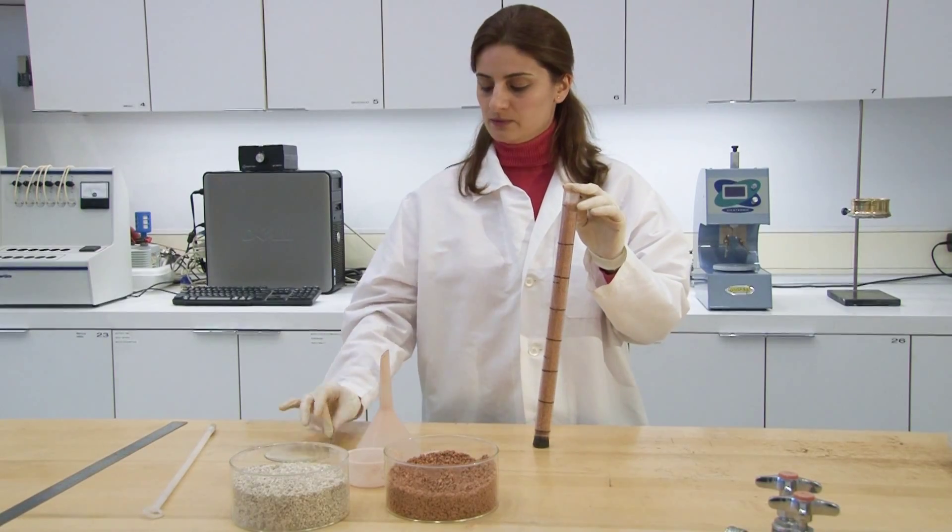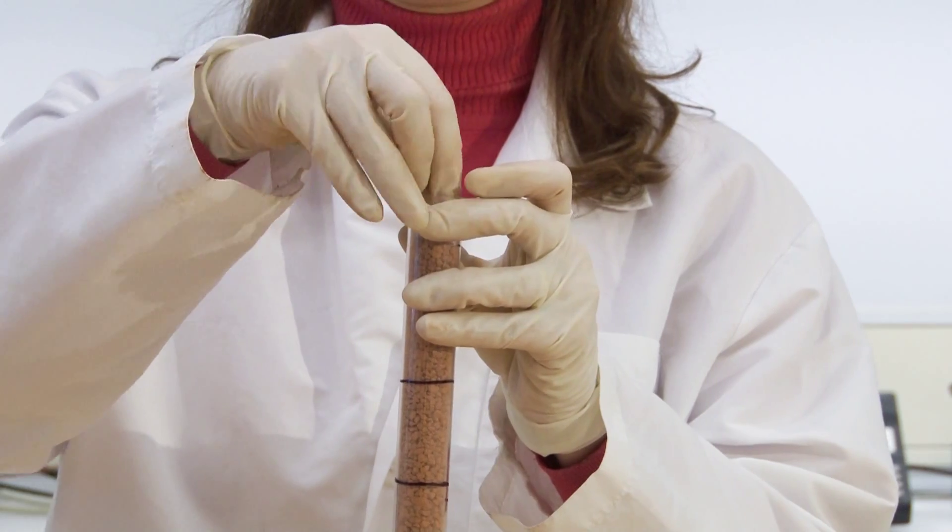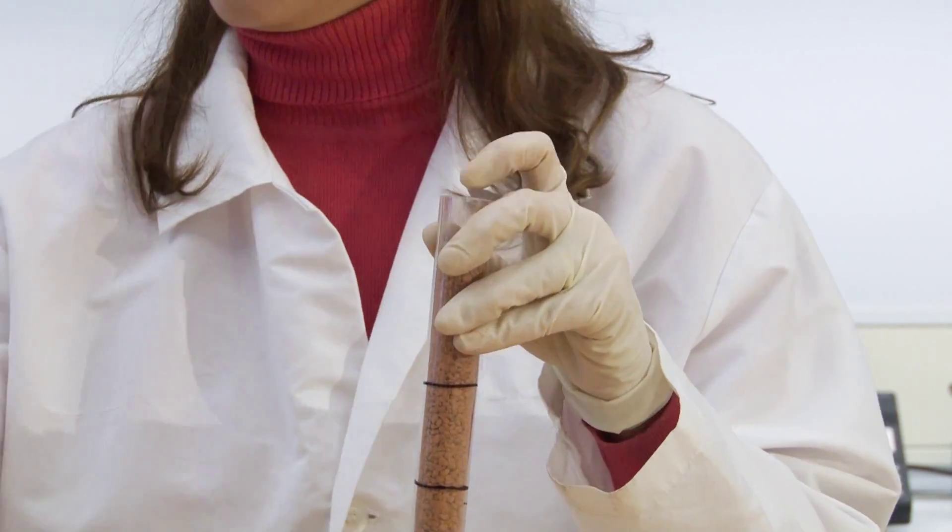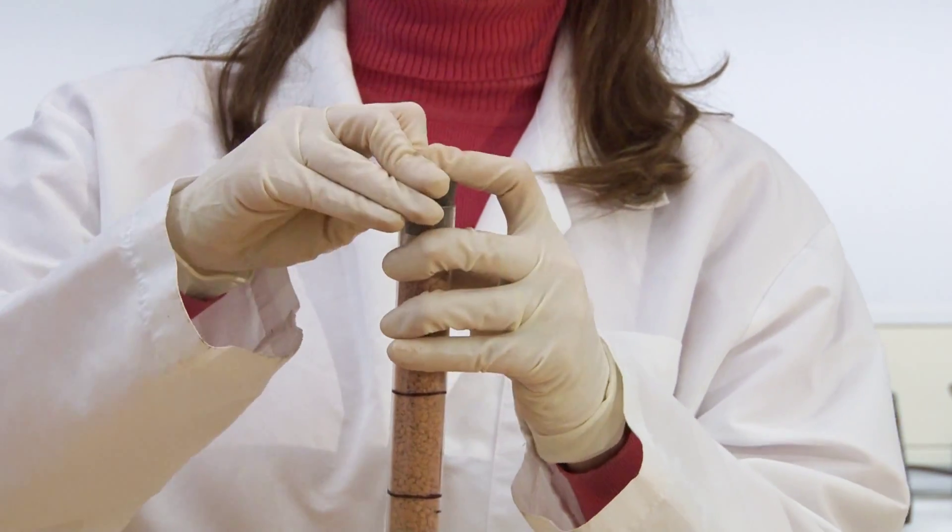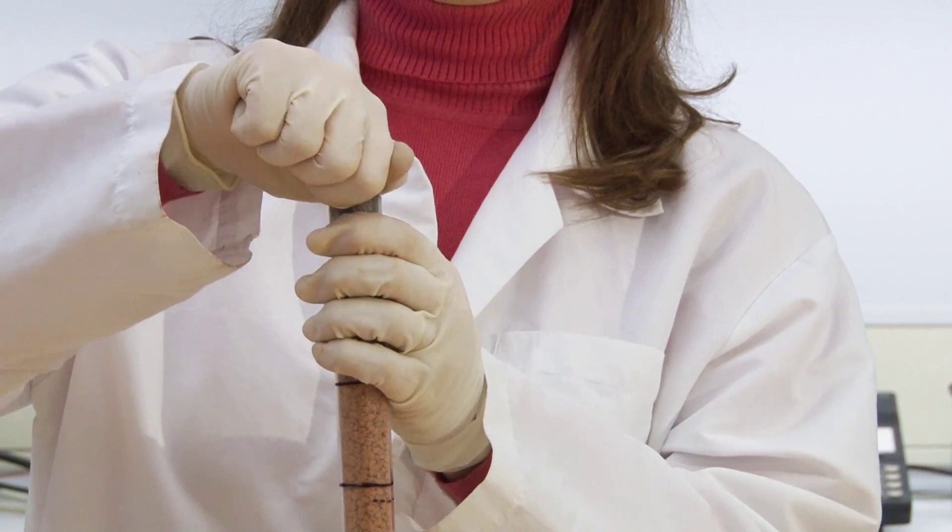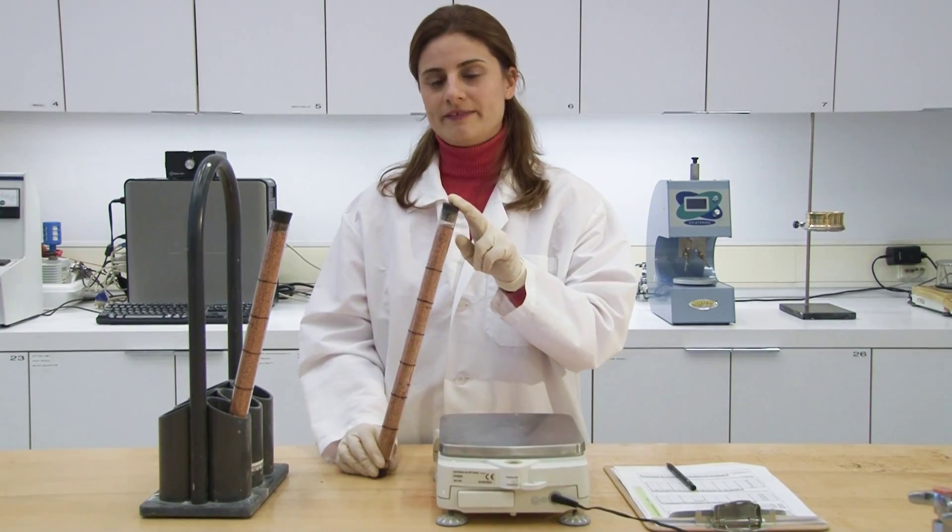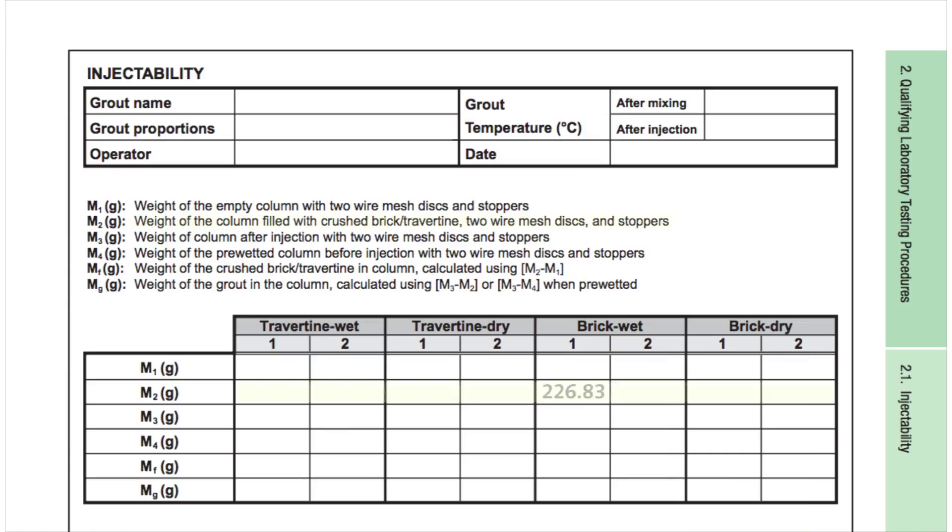I will place the wire mesh disc on the column and then the stopper. Finally, I will weigh the filled column with two stoppers to the nearest 0.1 gram.